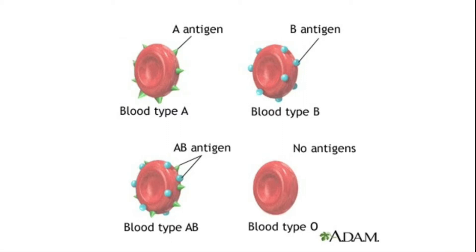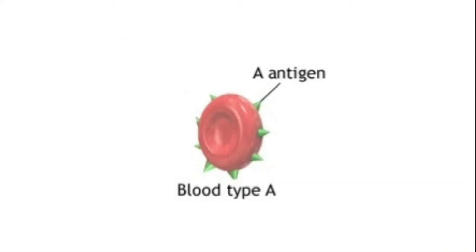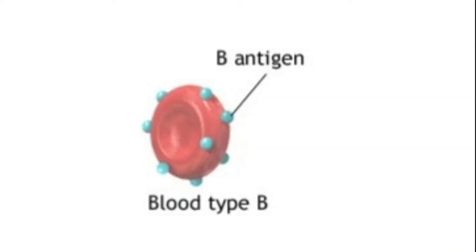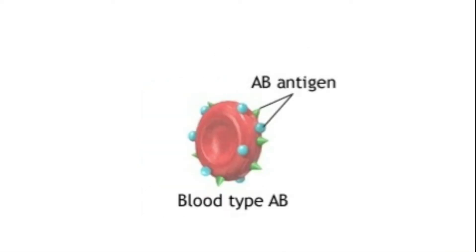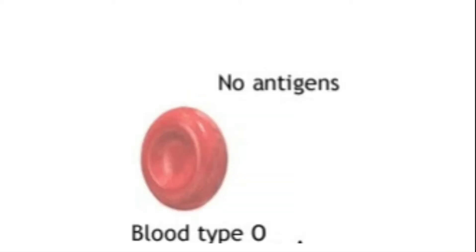For example, one with blood group A will have A antigen on the RBC. One with blood group B will have B antigen on the RBC. One with blood group AB will have both A and B antigens on the RBC. And one with blood group O does not have any of these antigens.